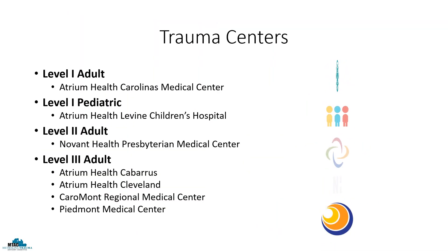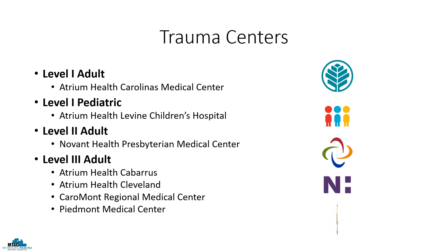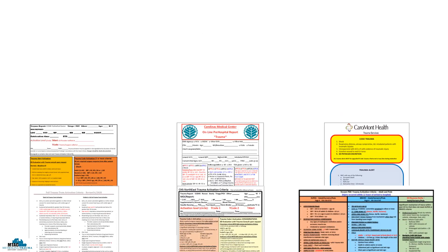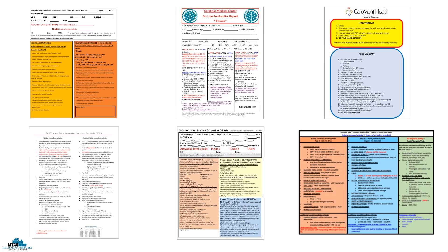You may not realize it, but we have seven trauma centers in the MTAC region — seven different trauma centers, seven different intake or pre-hospital notification forms. There are only six shown here, but CMC and Levine Children's use the same form, so that makes seven. These forms help guide their decision-making process on what resources need to be activated based off the report that you give.